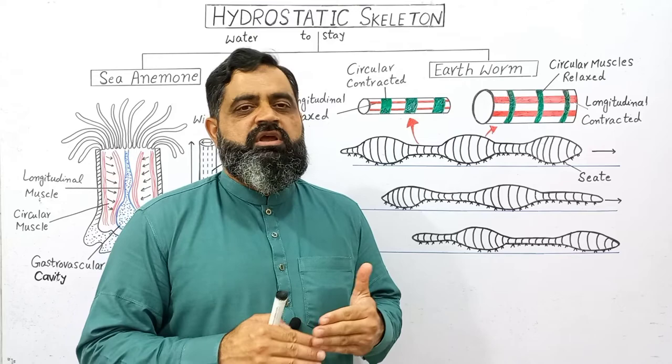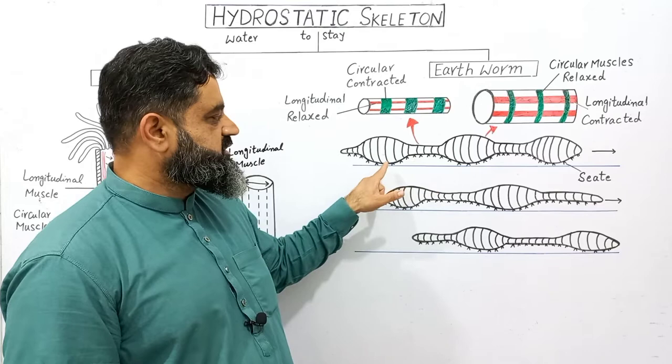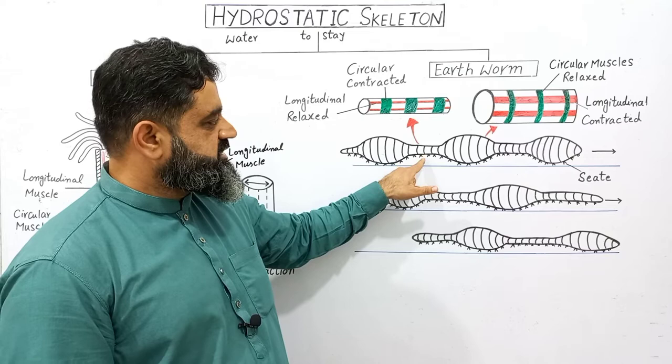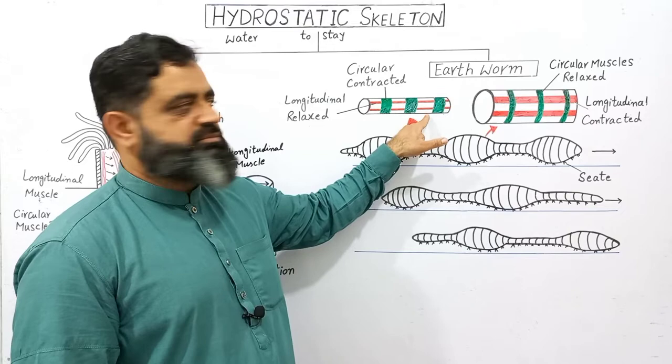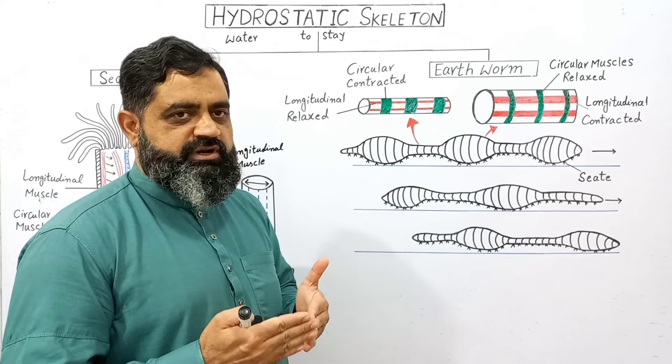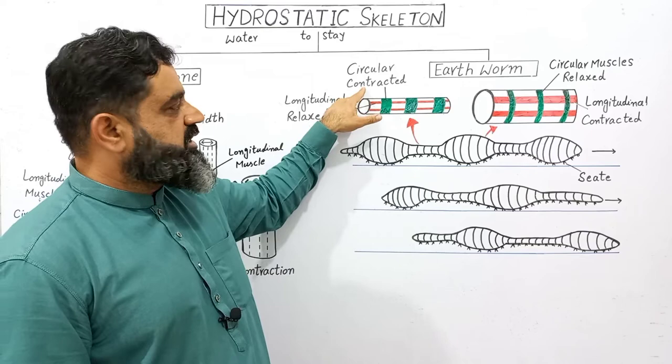As you can see in this diagram, there are two portions of the earthworm — one is thin and long, one is thick and short. In the thin and elongated area, the green muscles are circular muscles which are contracted, while the red muscles are longitudinal muscles which run along the length of the body and are relaxed. So when circular muscles are contracted and longitudinal muscles are relaxed, the body becomes thin and long.